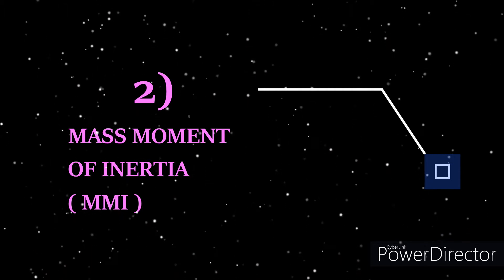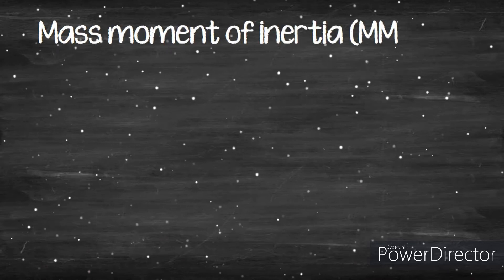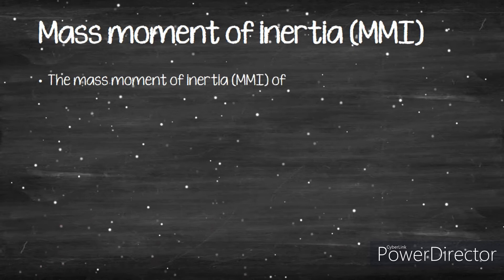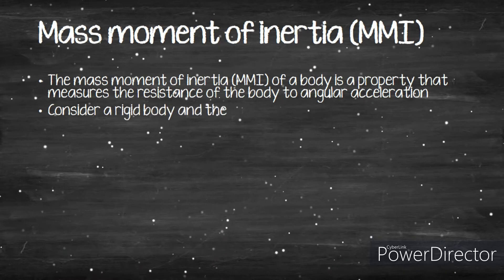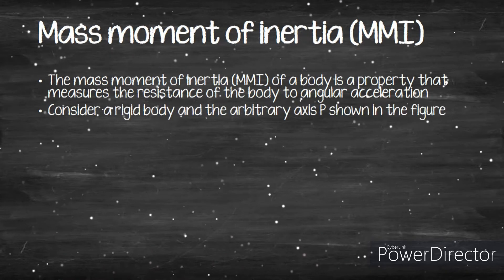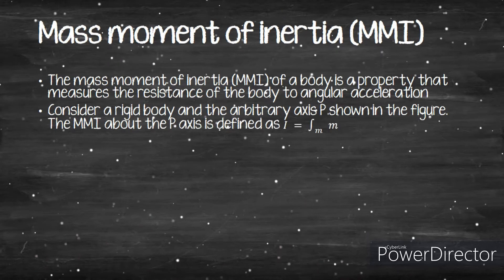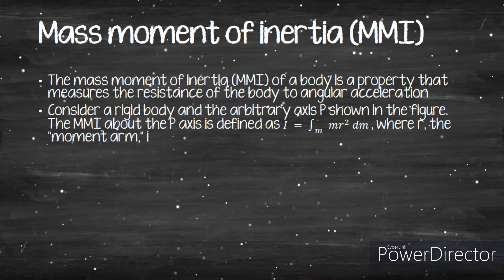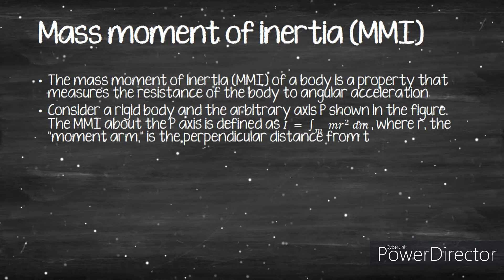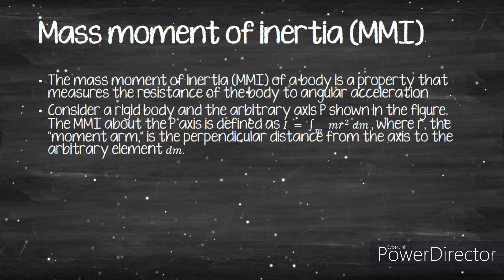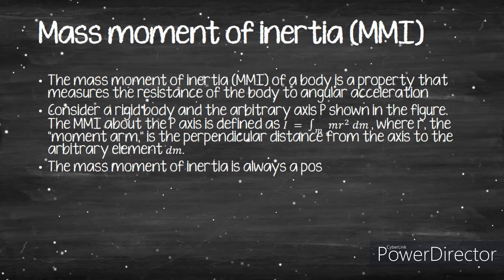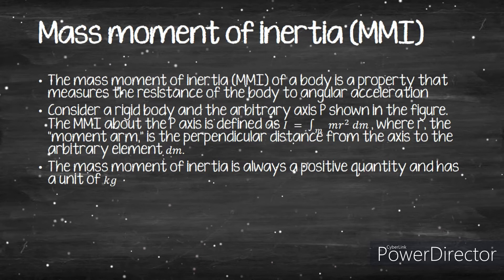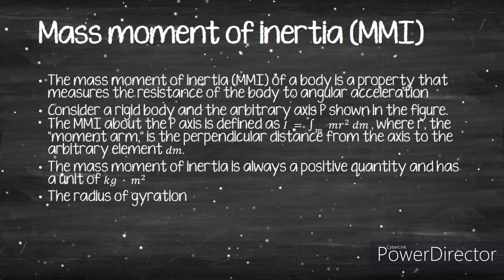The second type is mass moment of inertia, abbreviated MMI. The mass moment of inertia of a body measures the resistance of the body to angular acceleration. For a rigid body about an arbitrary axis P, the MMI is defined as I = ∫r² dm, where r is the perpendicular distance from the axis to the element dm. The mass moment of inertia is always a positive quantity with units of kg·m².